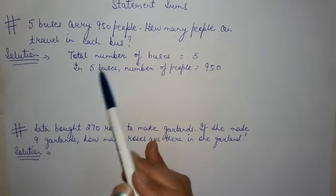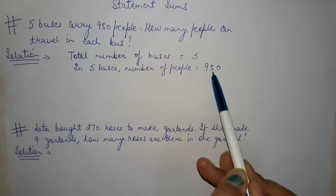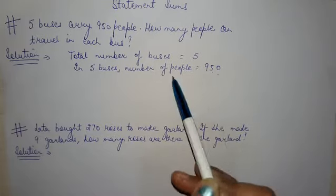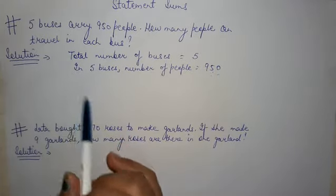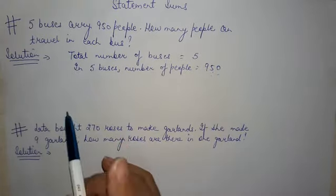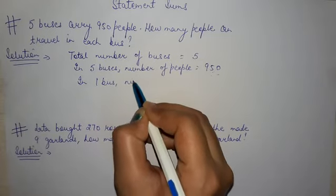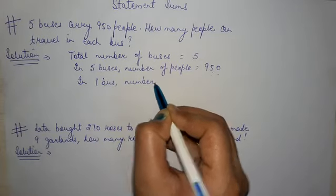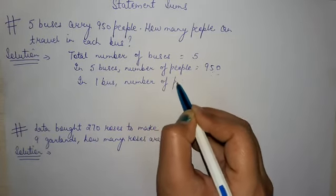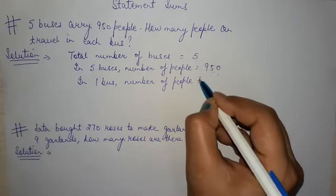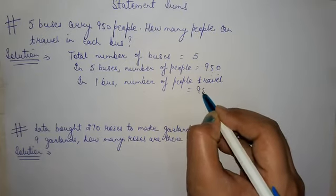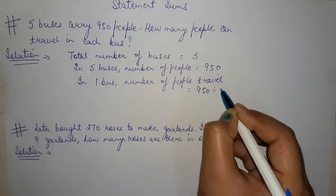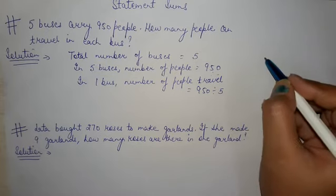Five buses are given and the number of people that travel in five buses is given. Now we need to find how many people travel in one single bus. So here we will write: in one bus, number of people travel is equals to 950 divided by 5. Now you will be dividing these two numbers.